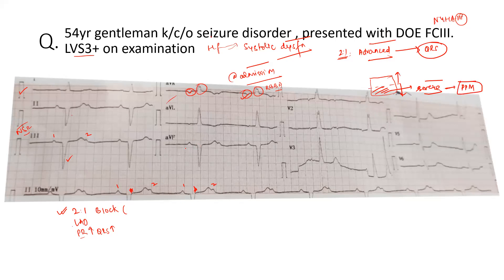The QRS appears a little wide, and the PR interval is also mildly prolonged. So there is a 2:1 AV block. There is a left axis deviation — pathological left axis because lead two is also negative. There is mild PR prolongation with wide QRS, indicating infra-hissian block.